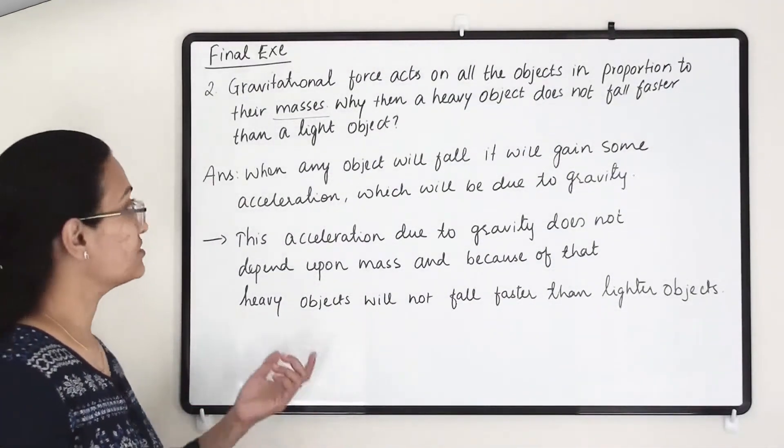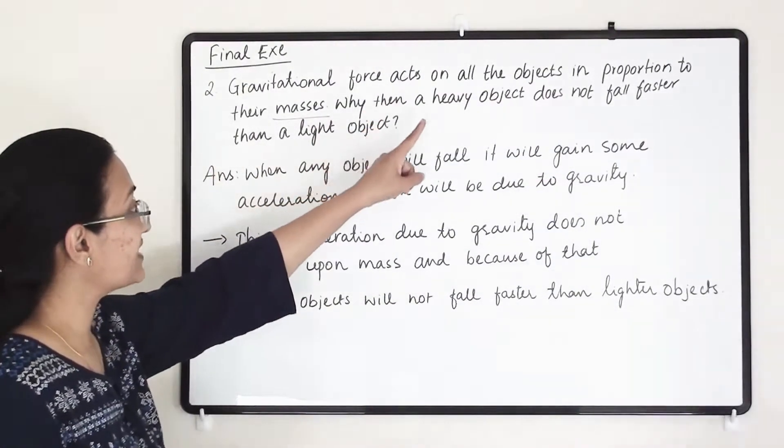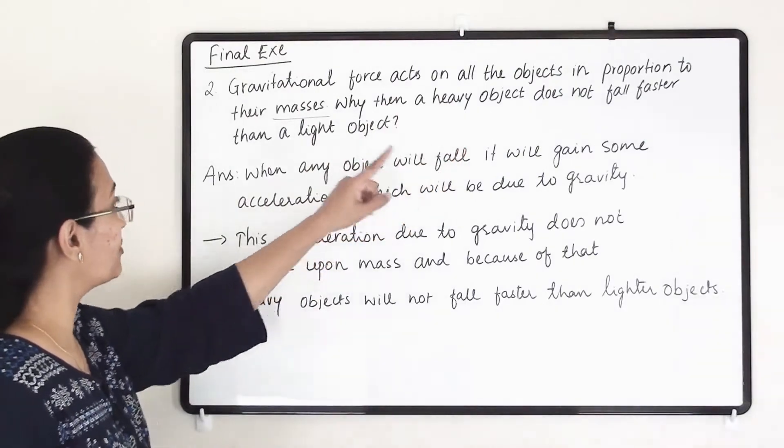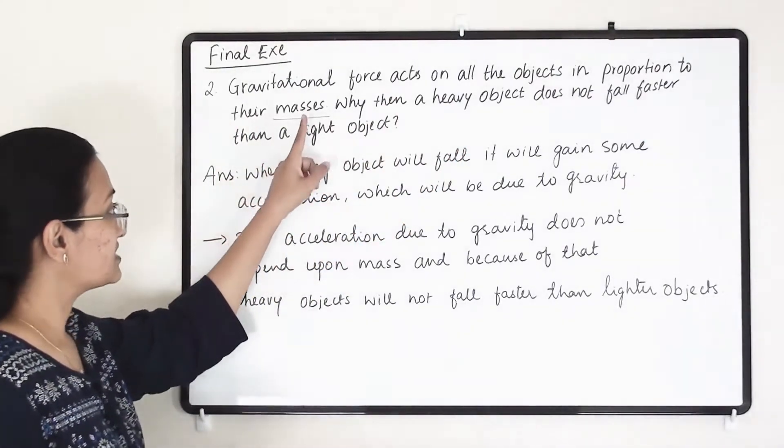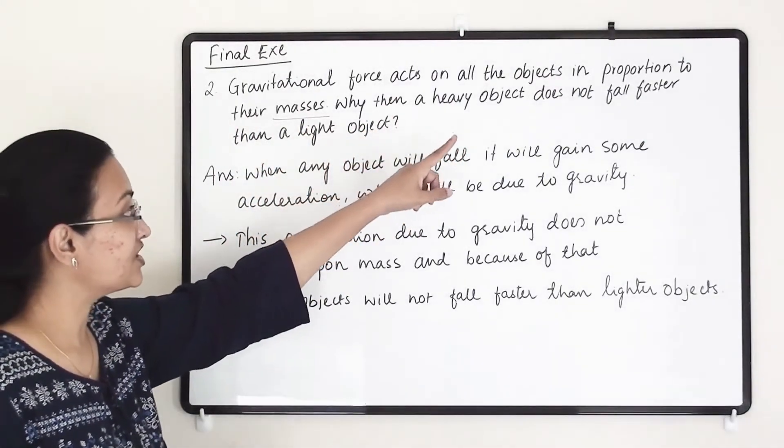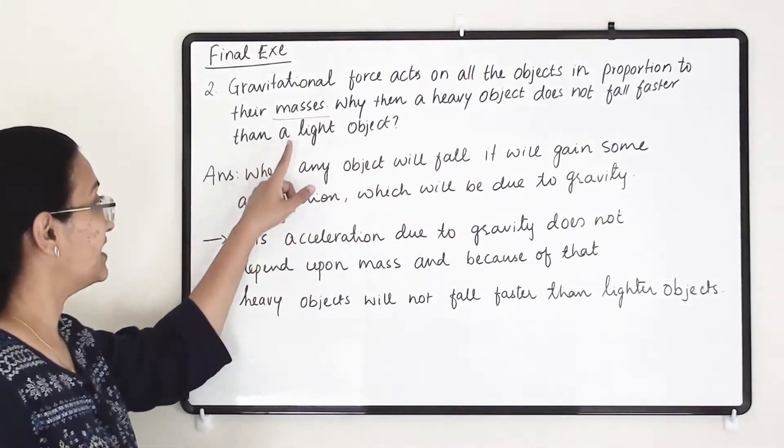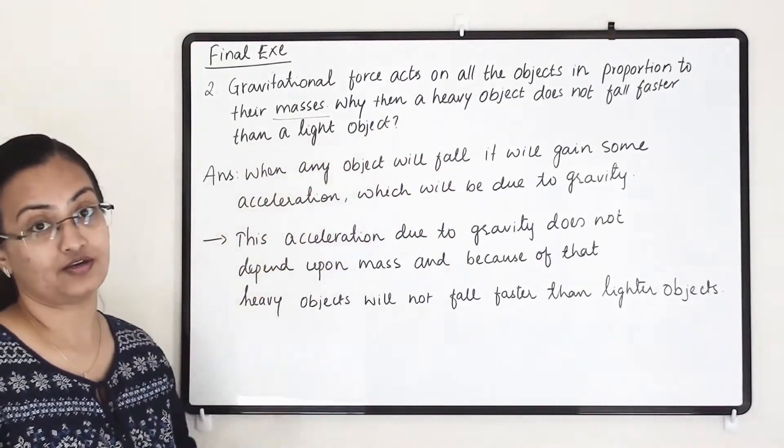Our second question is: gravitational force acts on all objects in proportion to their masses. Why then does a heavy object not fall faster than a lighter object?